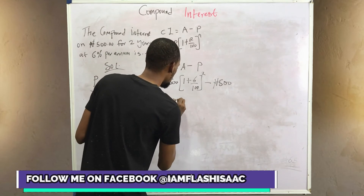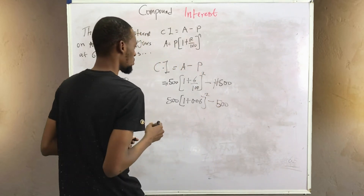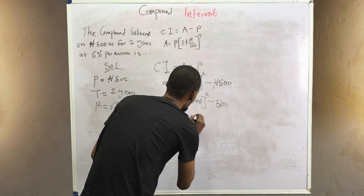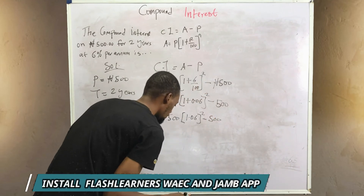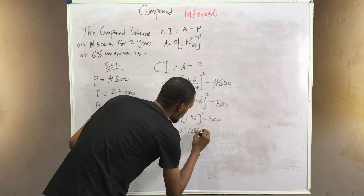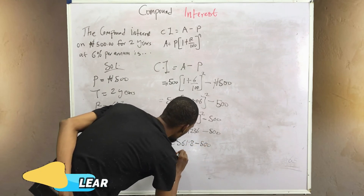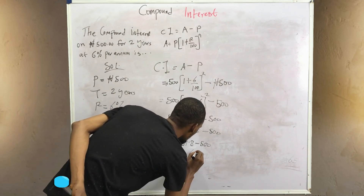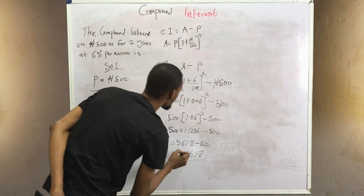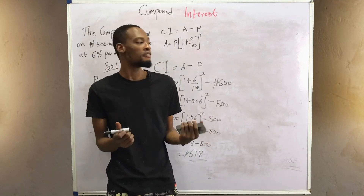So this gives us 500 times one plus 0.06 squared, minus 500. That equals 500 times 1.06 squared minus 500, which gives approximately 561.8 minus 500, equalling 61.8 naira. So your compound interest is 61.8 naira — that's amount minus principal. Thanks for watching, subscribe to this channel and feel free to check out my other videos.